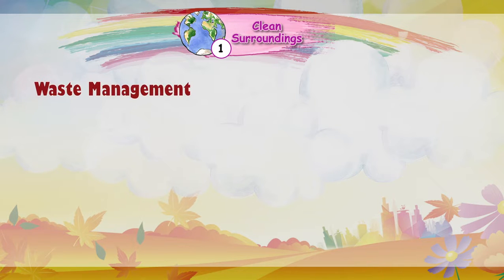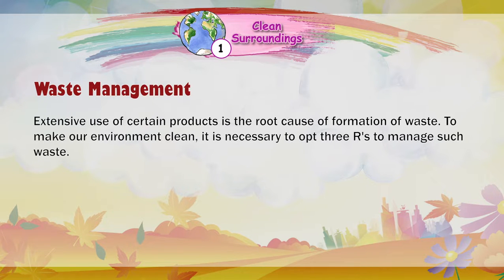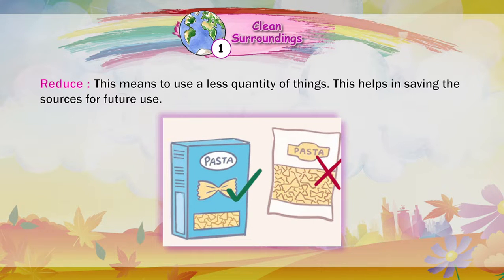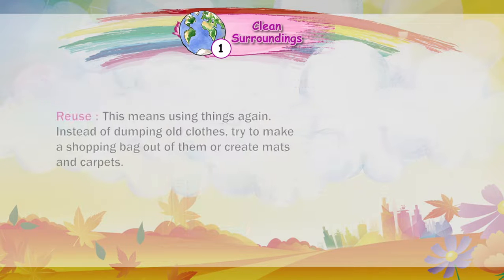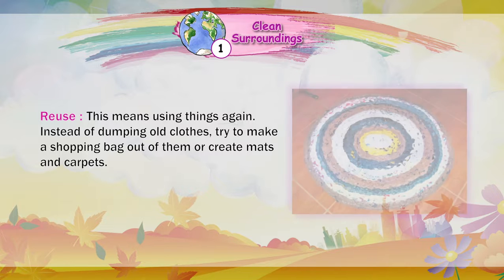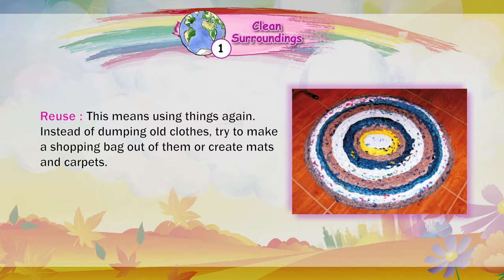Waste management: Extensive use of certain products is the root cause of formation of waste. To make our environment clean, it is necessary to opt for 3Rs to manage such waste. Reduce: This means to use a lesser quantity of things. This helps in saving resources for future use. Reuse: This means using things again. Instead of dumping old clothes, try to make a shopping bag out of them or create mats and carpets.